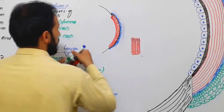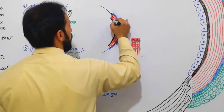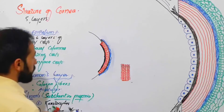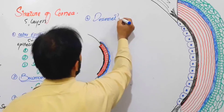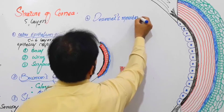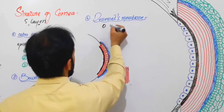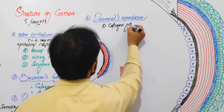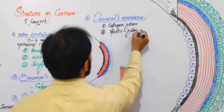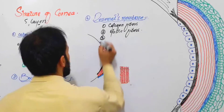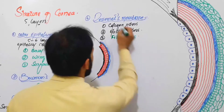Behind the stroma there is the fourth layer, another collagenous layer called Descemet's membrane. This membrane is composed of collagen fibers, some elastic fibers, and also some cells called fibrocytes are present here in Descemet's membrane.